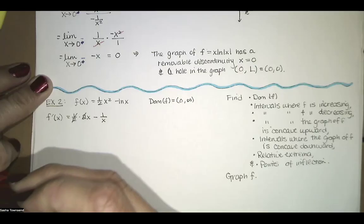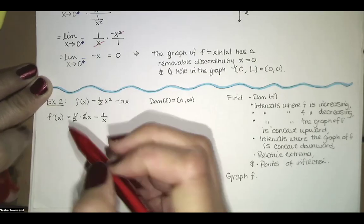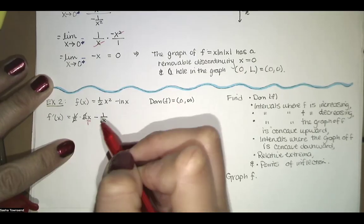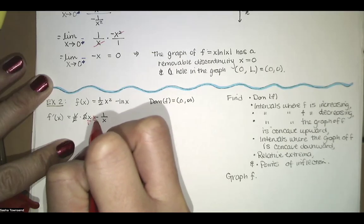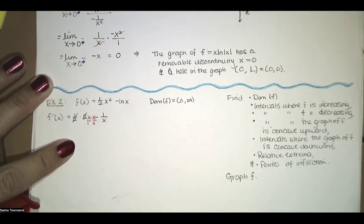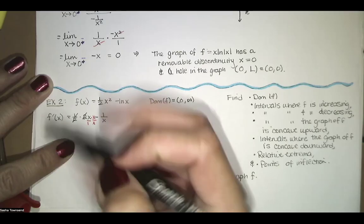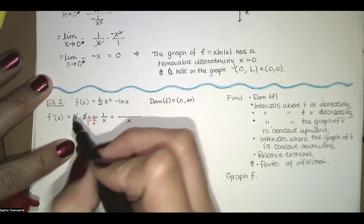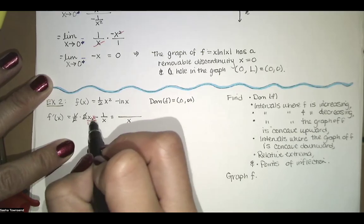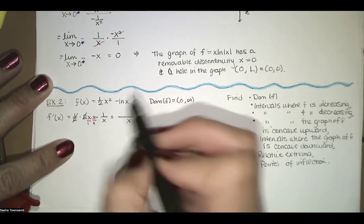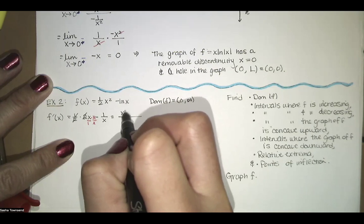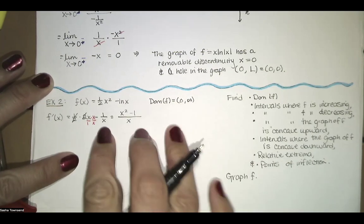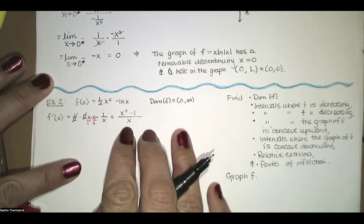If you want to, you can get a common denominator here. There's an implied 1, so multiply by x over x. The common denominator is x, and we subtract the numerators: x times x is x squared, minus 1, all divided by x. So that's our f prime.